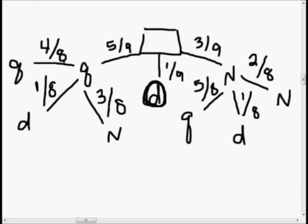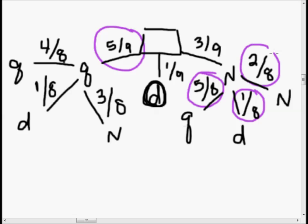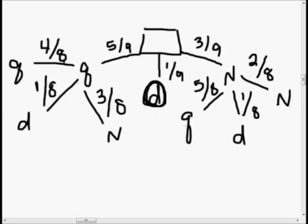One important thing to point out: if you add each of the branches together at any given level, they equal 1. So 5 ninths plus 1 ninth plus 3 ninths equals 1. And at the second level, 5 eighths plus 1 eighth plus 2 eighths also equals 1. If you're not getting that part, the rest of this is going to get a little crazy — so make sure you understand that each set of branches at any node must sum to 1.